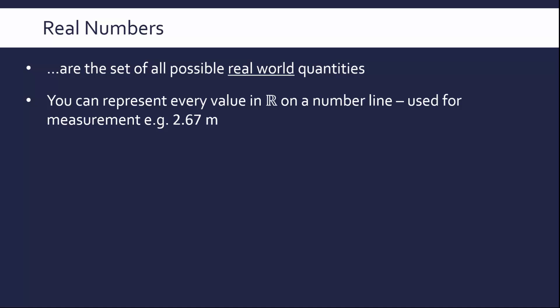Whereas we said right at the start natural numbers are for counting, we now use real numbers for measurement because we can get as specific as we want to. For example, 2.67 is not a natural number, but we can use it to measure somebody's height.